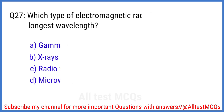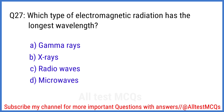Q27. Which type of electromagnetic radiation has the longest wavelength? The right answer is option C. Radio waves.